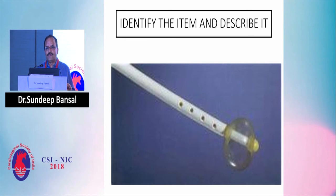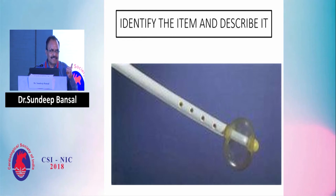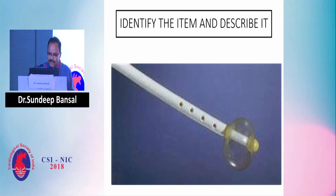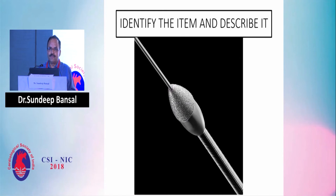The Berman catheter is used for right ventricular injection. The balloon is at the tip and the holes are proximal to the balloon, so injection goes into the RV cavity without causing problems. Also shown here is a rotablation burr.